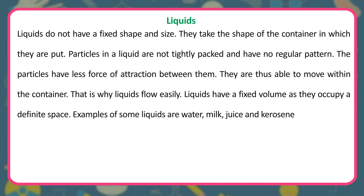Liquids do not have a fixed shape and size. They take the shape of the container in which they are put. Particles in a liquid are not tightly packed and have no regular pattern. The particles have less force of attraction between them, and are thus able to move within the container — that is why liquids flow easily. Liquids have a fixed volume as they occupy a definite space. Examples of some liquids are water, milk, juice, and kerosene.